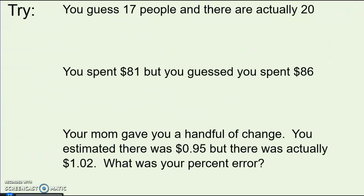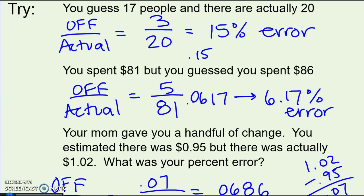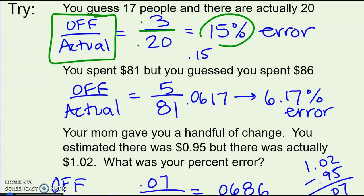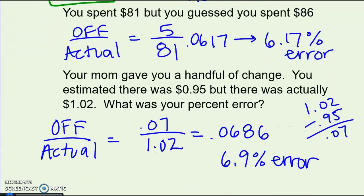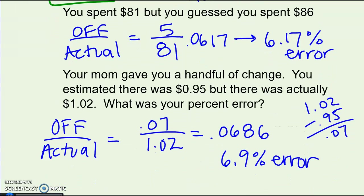There are three practice problems to try. Set up the formula, find the percent error for each one, then check. Starting with the formula: how much you were off by divided by the correct or actual number, then turn it into a percent and label it error. The answers are: 15% error, 6.17% error, and approximately 6.9% error. Keep a couple decimal places and then round off.